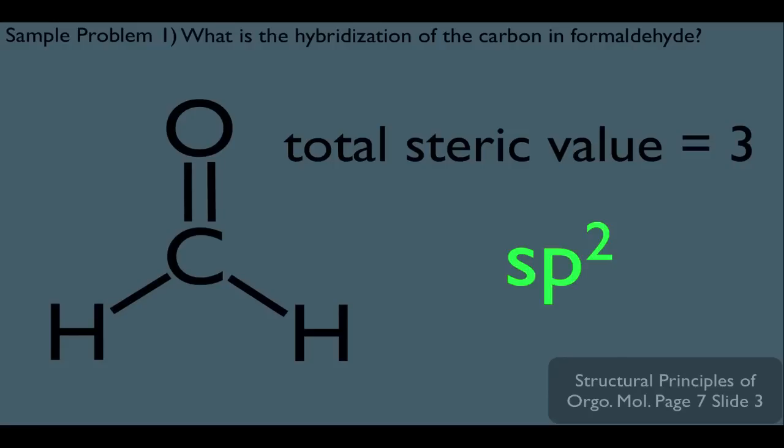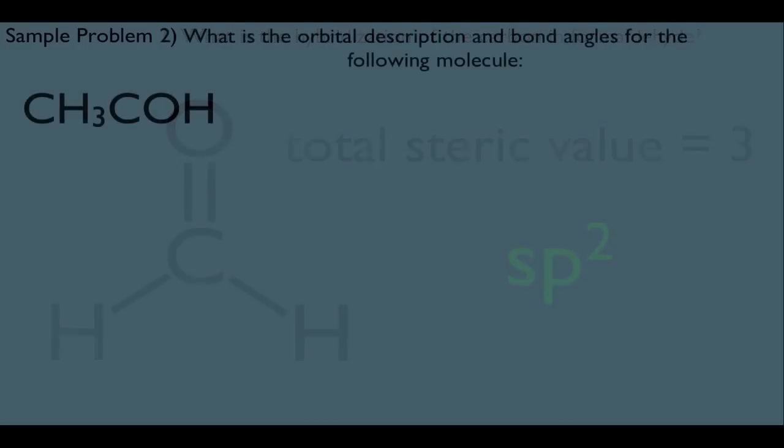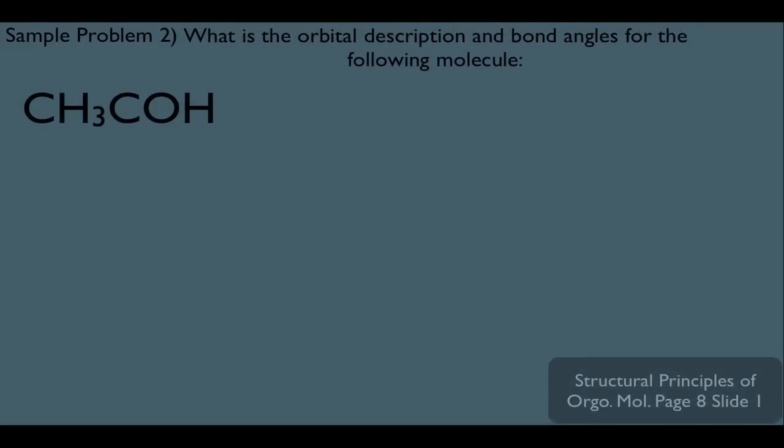Notice this could be done mentally on an orgo exam and done very quickly. But why do we need to do this? Let me show you the advantage. The sample problem asks: what is the orbital description and bond angles for the following molecule? They're asking us about the structural details of this molecule, which means we need a good understanding of the type of bonding happening. And in order to understand the bonding, we should understand the hybridization.